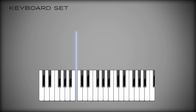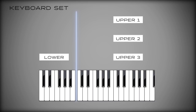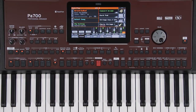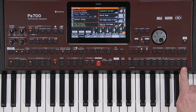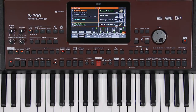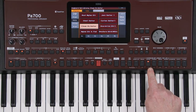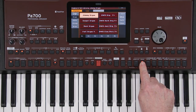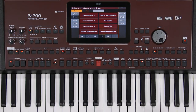Sometimes your keyboard set might be a layer of three sounds on the top plus a sound in the lower, or two sounds in the upper with no sound in the lower, or simply one sound across the whole keyboard. Whatever you set up — the sounds, levels, split point, panning, effects, etc. — can be saved and recalled from the keyboard set library using the nine keyboard set library buttons on the right. These buttons open up a selection of keyboard sets. The tabs take you to more groups of eight, and you can repeatedly press the keyboard set library buttons to advance through the tabs.